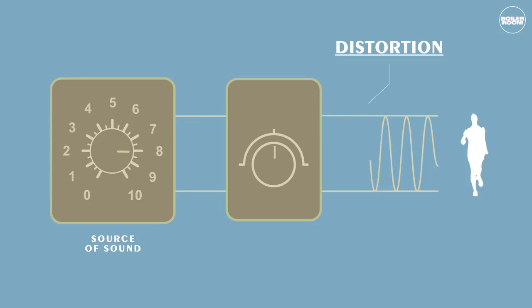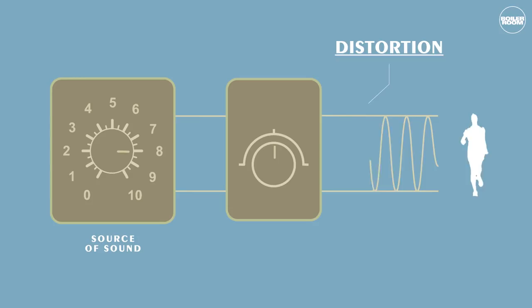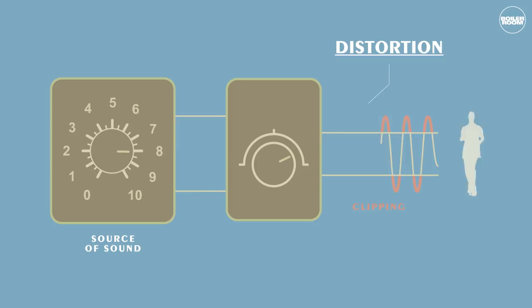Distortion is created by amplifying the intensity of a signal until it begins to decompose. The most common form is clipping, or flattening in the peaks of the sound wave.